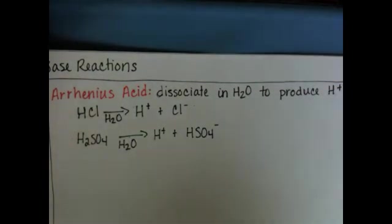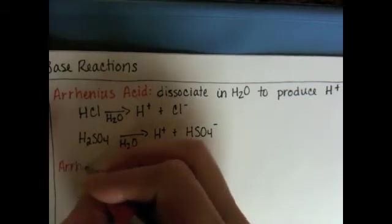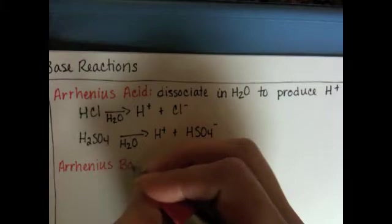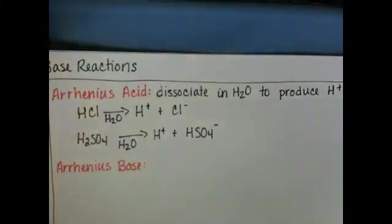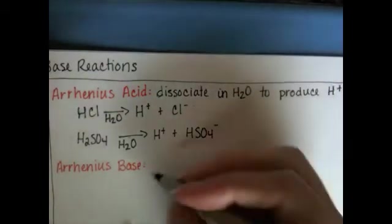So that was the definition of an acid and the Arrhenius definition of a base. This was very similar. It was defined as a substance that dissociated in water to produce hydroxide ions, OH-.